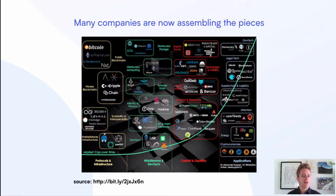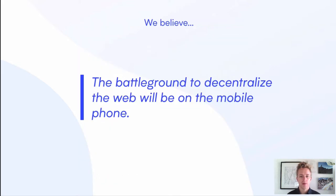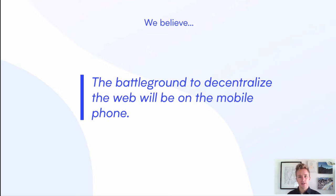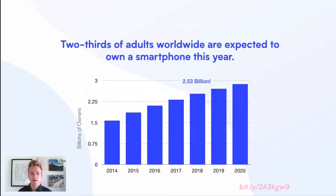The current movement of decentralizing technologies really kicked off in 2009 with blockchain becoming practical. Since then we've seen a flourishing of companies trying to solve different problems of centralization — taking things we were doing in centralized ways and thinking about how to reinvent them through blockchain or other decentralized protocols. These companies are really assembling the pieces of a new internet, the building blocks we need to reinvent the way we interact with technology. At Textile, we believe the battleground to decentralize the web is going to be on the mobile phone.